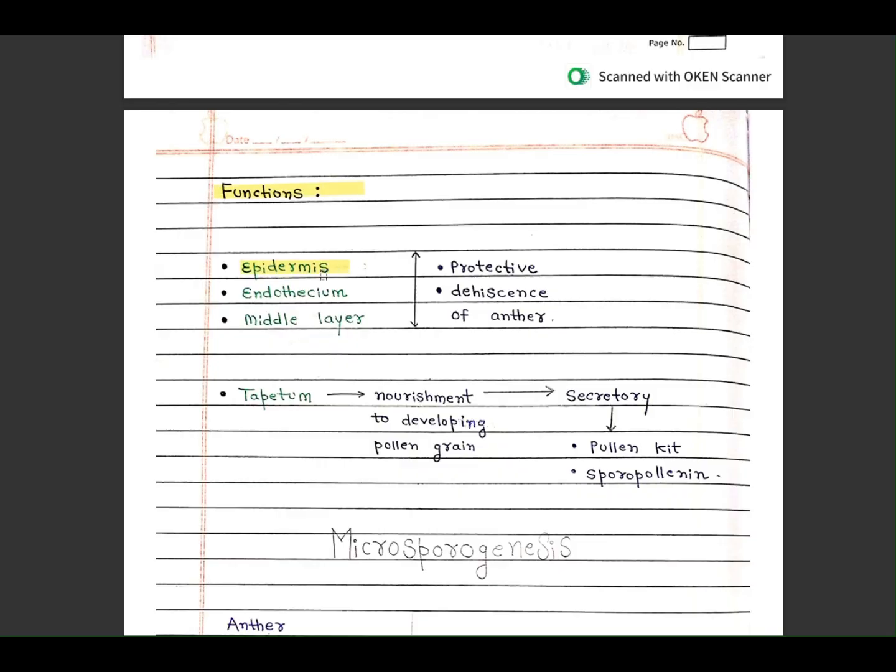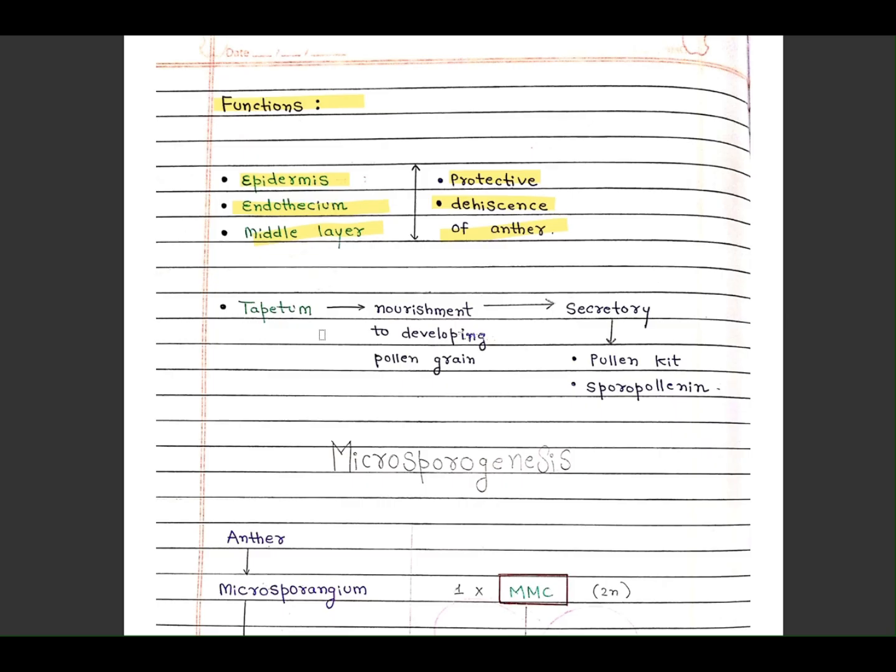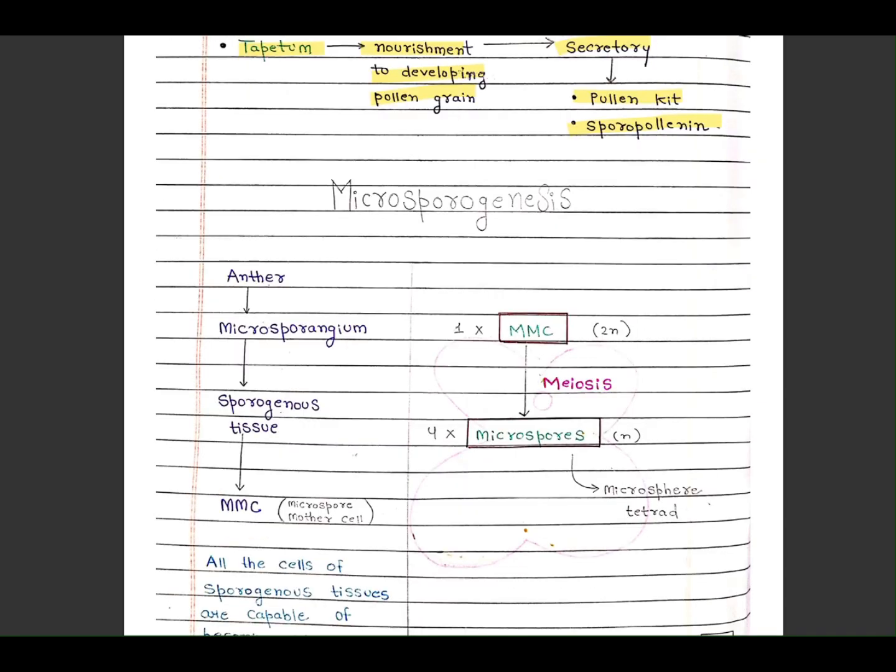Functions: epidermis is protective, endothecium helps in dehiscence of anther, middle layer provides nourishment. Tapetum function is nourishment to developing pollen grains, it is secretory and produces callose and sporopollenin.